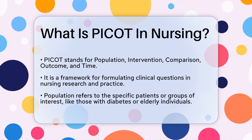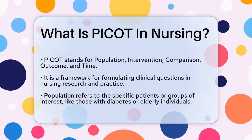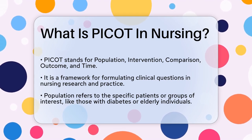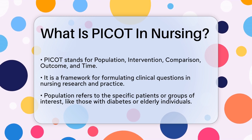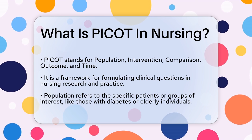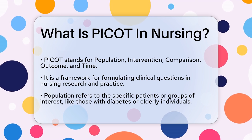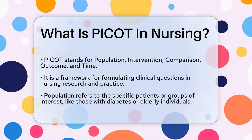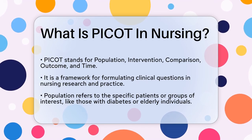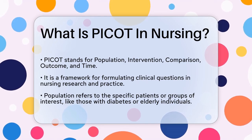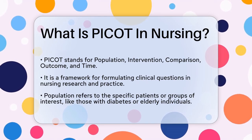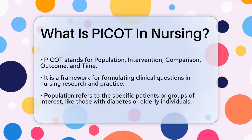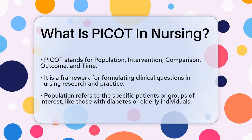Let's break it down. The first part, Population, refers to the patients or groups you're interested in. This could include specifics like diagnosis, age, gender, or geographic location. For example, you might be looking at patients with diabetes or elderly patients in a nursing home.